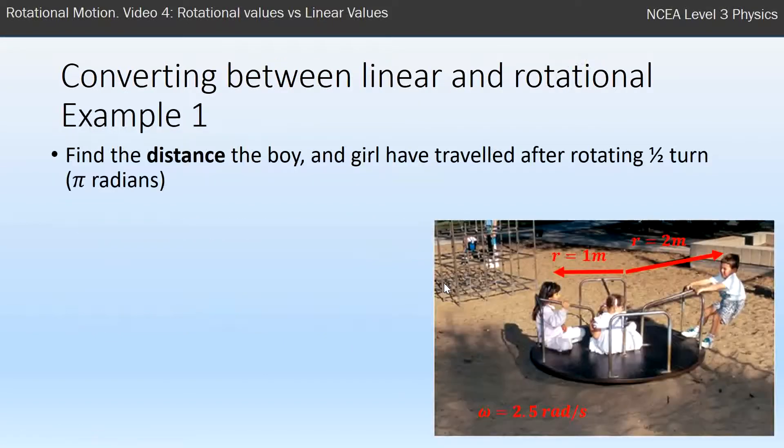As an example, we have a merry-go-round here. We're looking at this boy on the right and this girl on the left. Find the distance the boy or the girl have traveled after rotating a half turn or half rotation, which is π radians.